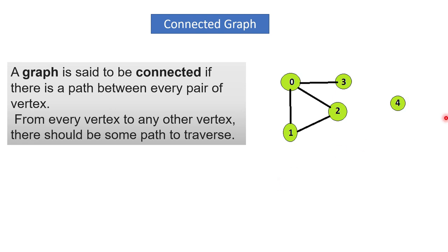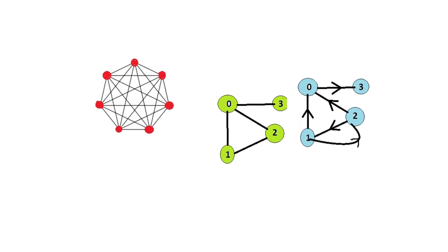Suppose a node four is present and there is no edge present between it and anyone — then it is a disconnected graph because there is no route to go from one to four or zero to four. That is a disconnected graph. If we consider direction also, it can be a disconnected graph — because if the direction is from three to zero only, we can't move from zero to three since the direction is from three to zero.